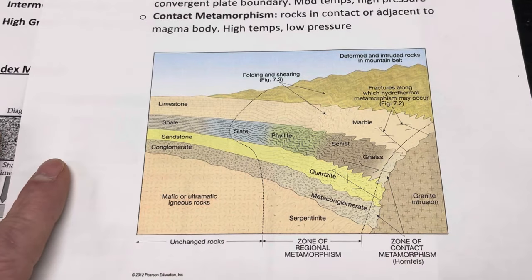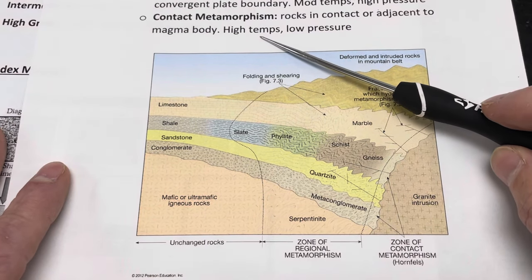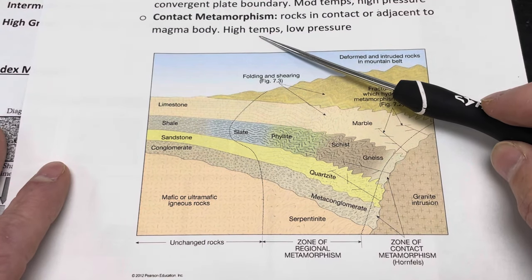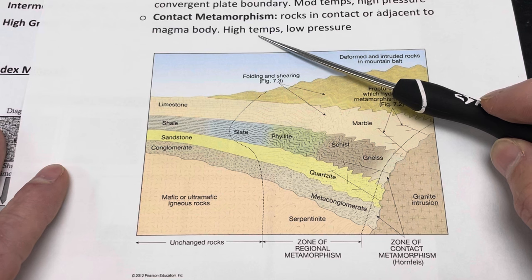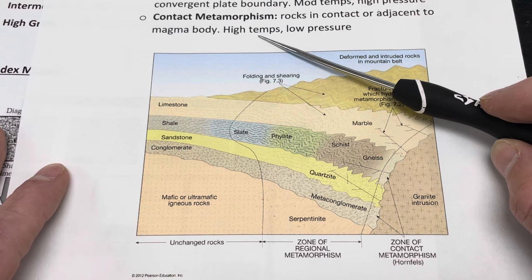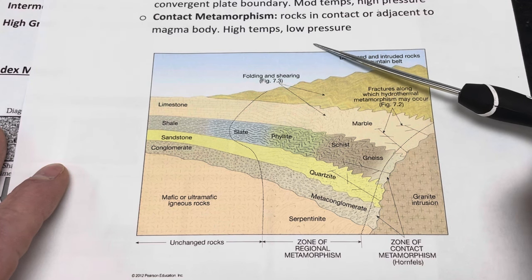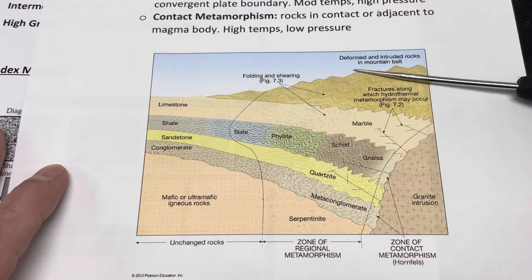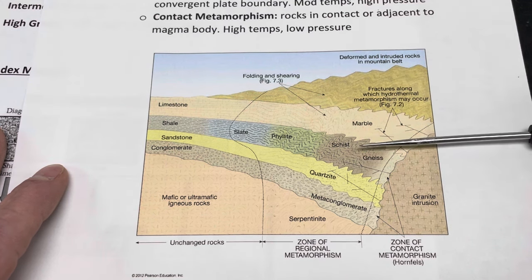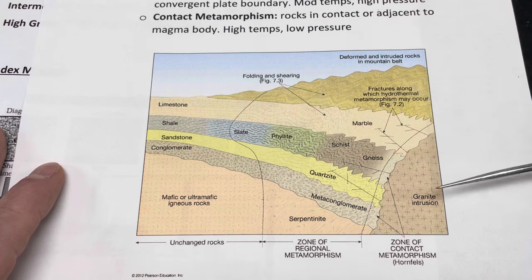Contact metamorphism tends to produce very high temperatures, because you have magma which is upwards of 1,500 to 1,700 degrees Fahrenheit — maybe something like a thousand degrees centigrade — but relatively low pressures, because a lot of times contact metamorphism takes place at fairly shallow levels of the earth's crust.